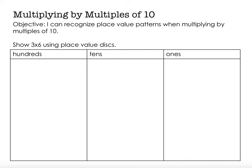Hi, this is Mrs. Nelson. We're going to continue our place value understanding by looking at multiplying by multiples of 10 — so multiplying by 10, 100, 1000, etc. The objective says: I can recognize place value patterns when multiplying by multiples of 10.